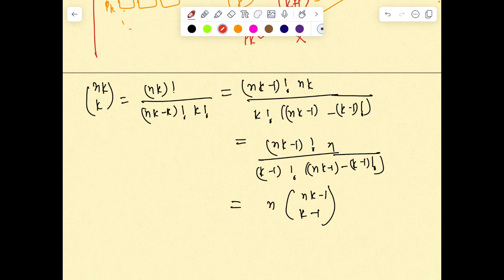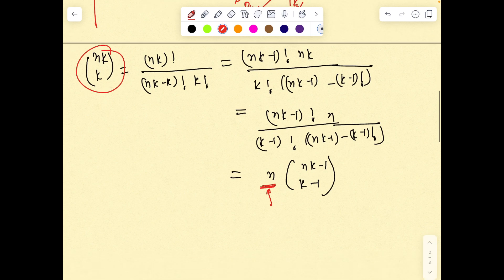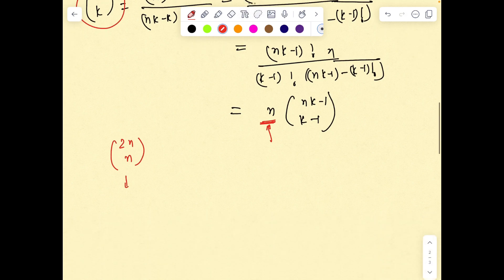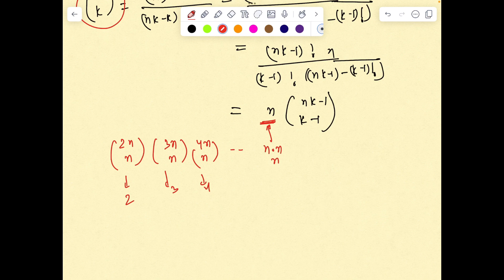That is an interesting result because we know now nCk will be definitely divisible by the natural number n. So if I have 2nCn, it will be divisible by 2. If we have 3nCn it will be divisible by 3. If you have 4nCn it will be divisible by 4 and so forth. So their product will be divisible by 2×3×4 till n, which is n factorial.